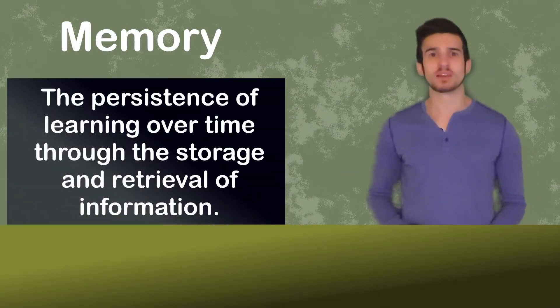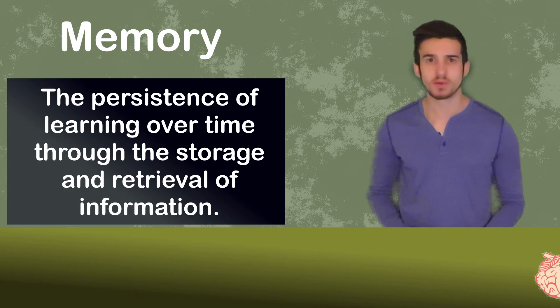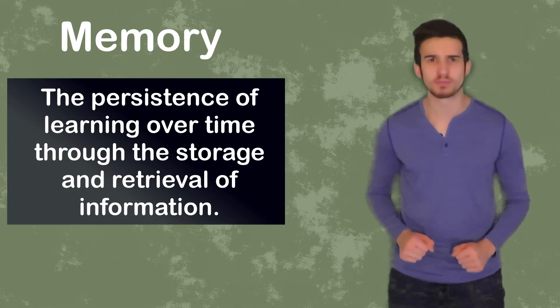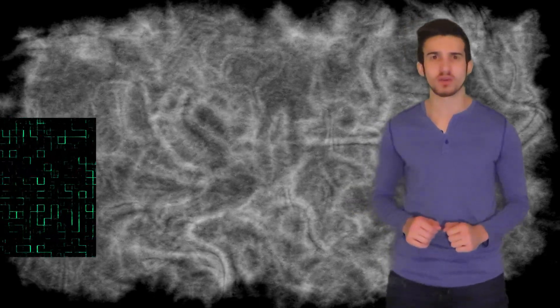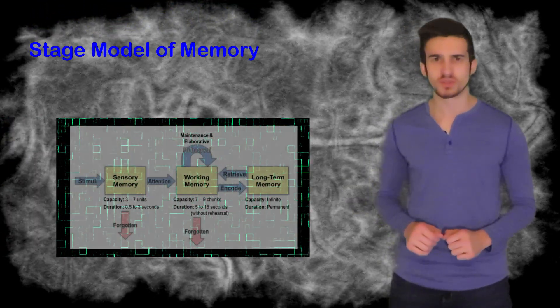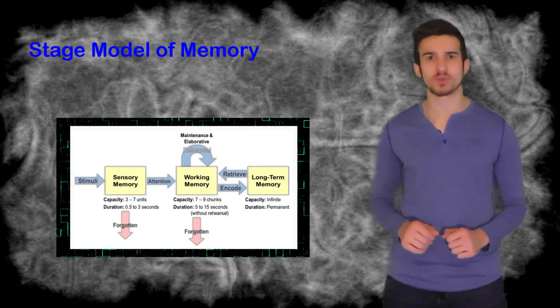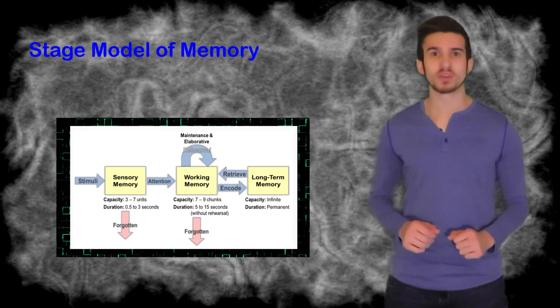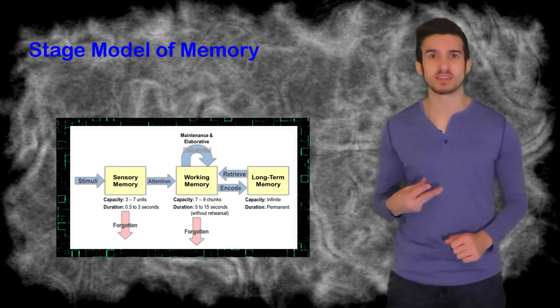Memory is going to be the presence of learning over time through the storage and retrieval of information. Scientists have constructed several models to explain how our memory works. However, no single model has been able to capture every aspect of human memory. One very influential model of memory is going to be the stage model of memory proposed by Richard Atkinson and Richard Shiffrin.